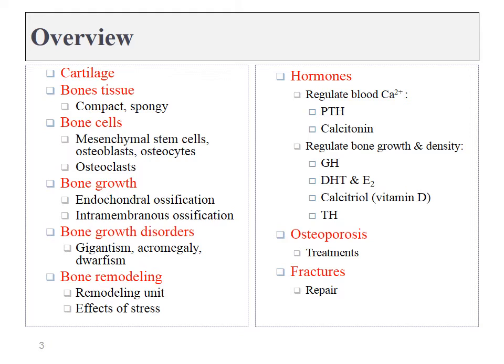To do that, we'll talk about cartilage first, then move on to bone tissue, discussing the cells and the extracellular matrix. We'll talk about how bones grow, a few diseases that illustrate some physiology, bone remodeling and how bones stay healthy, a big list of hormones, and lastly osteoporosis and fractures.